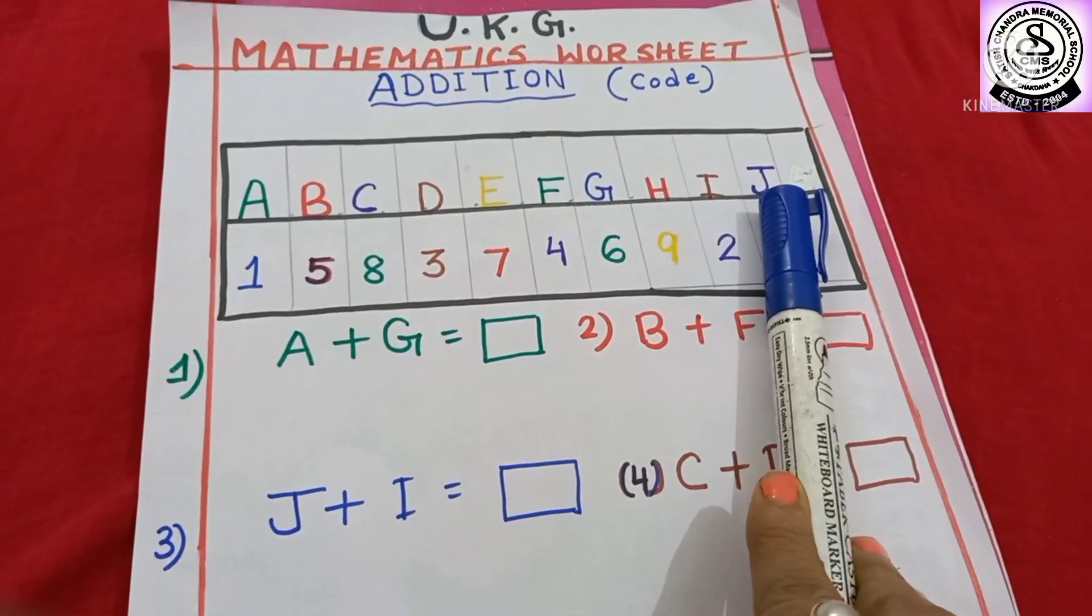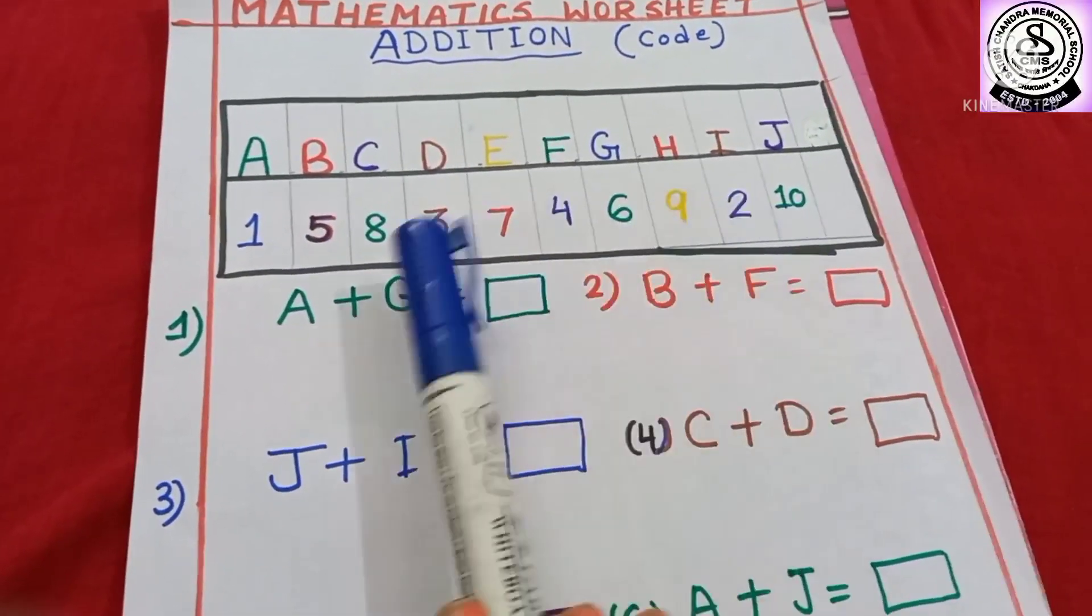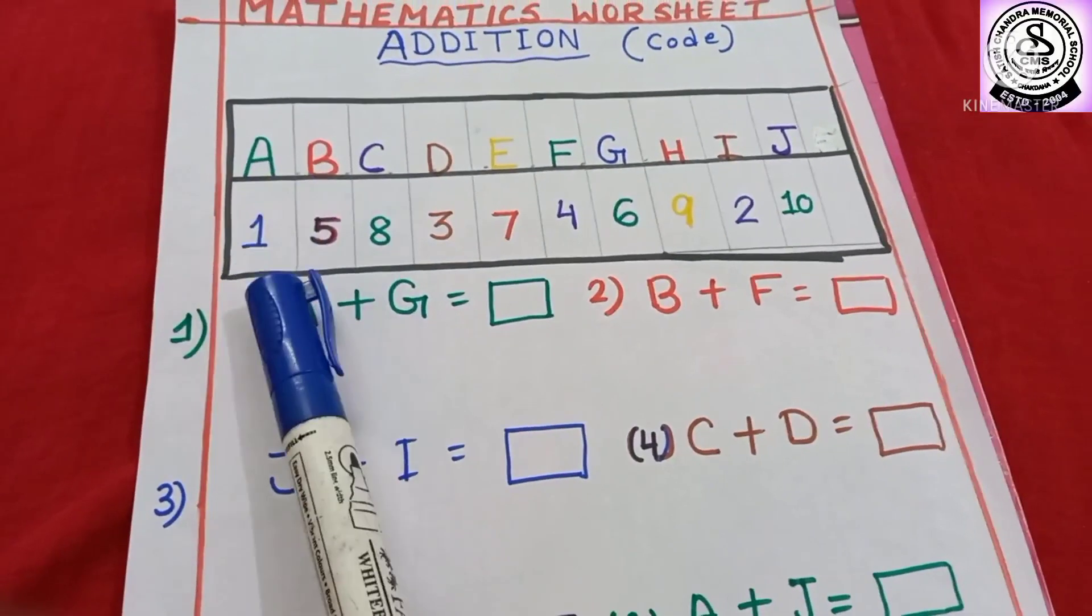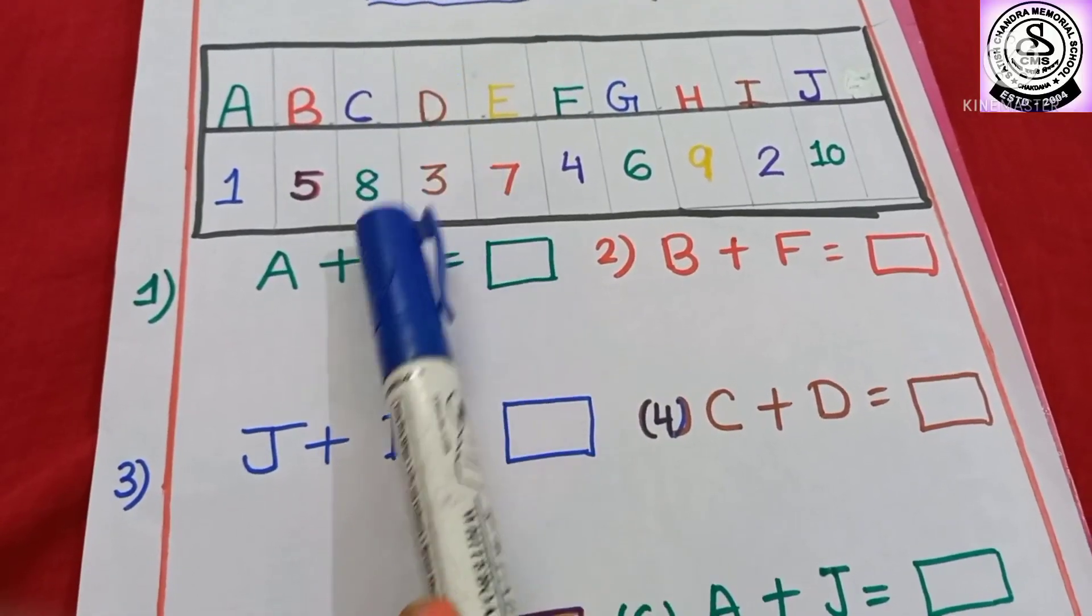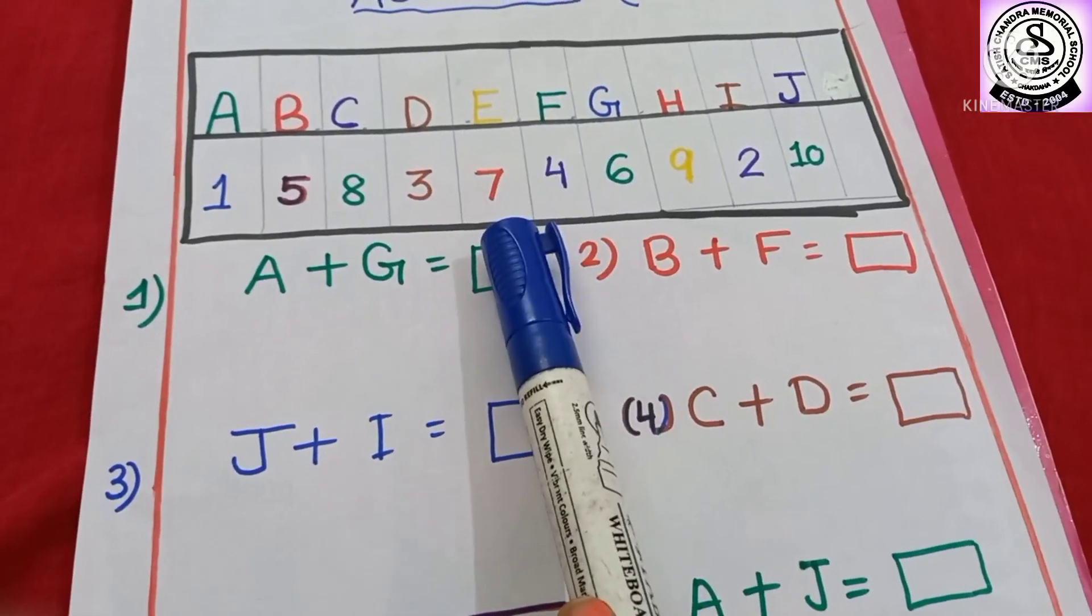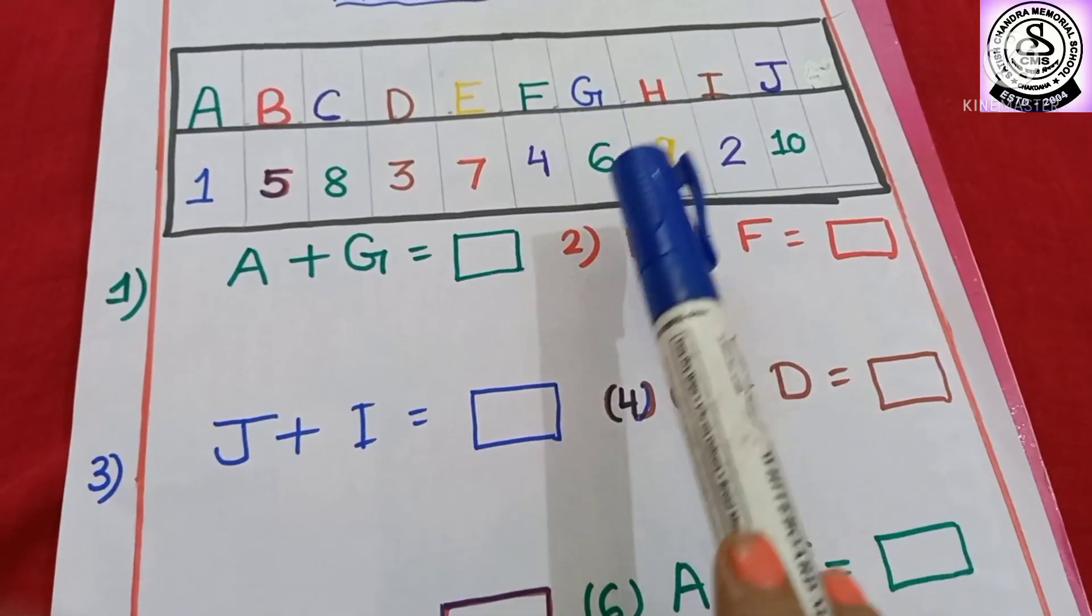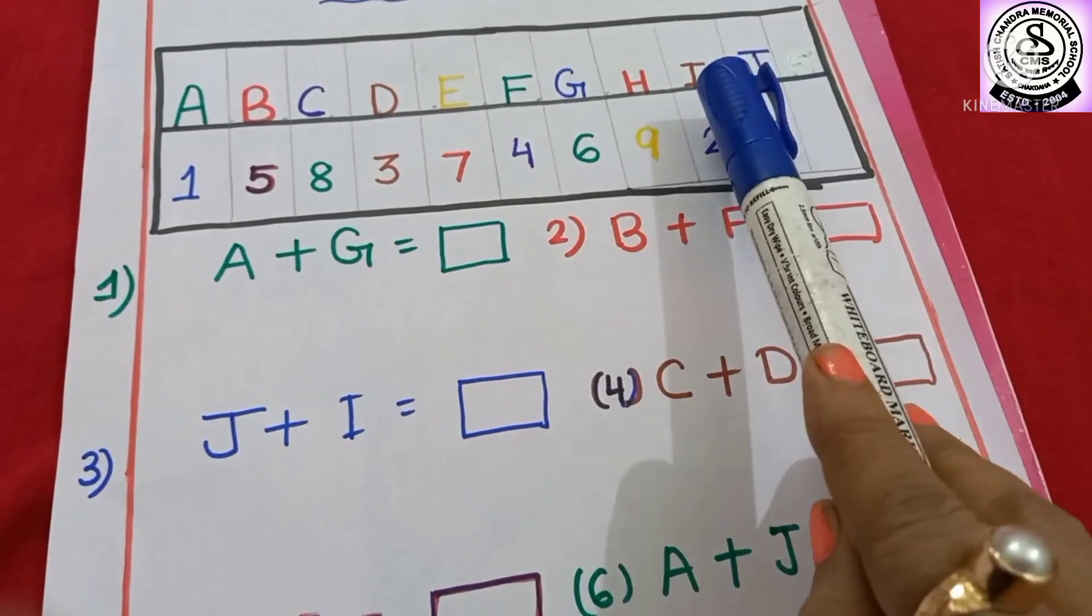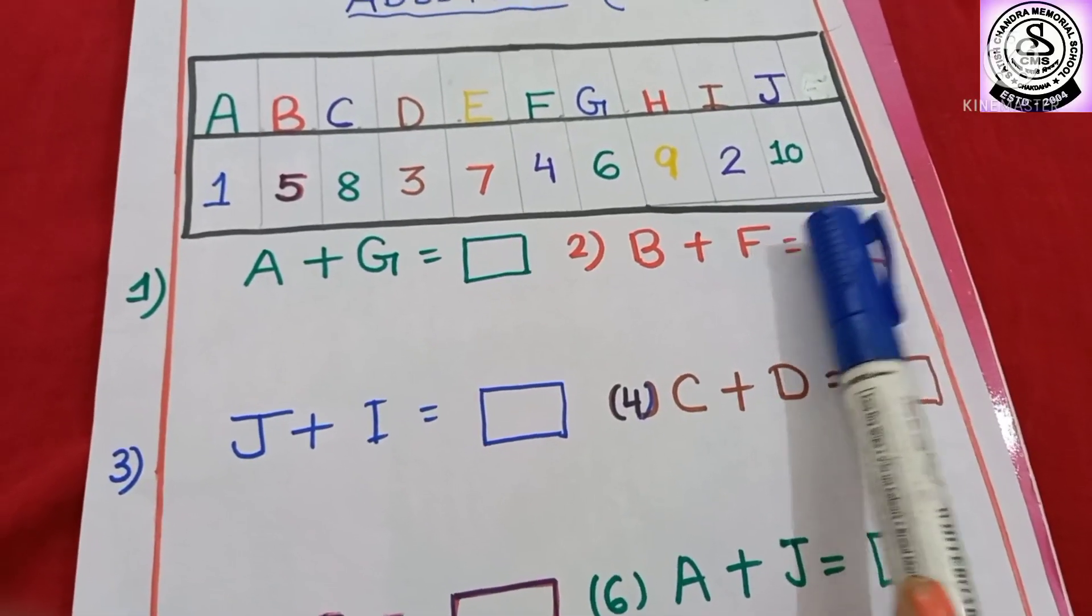So, I have written 10 alphabets and here you can see I have written some code also. A is 1, B is 5, C is 8, D is 3, E is 7, F is 4, G is 6, H is 9, I is 2, J is 10.